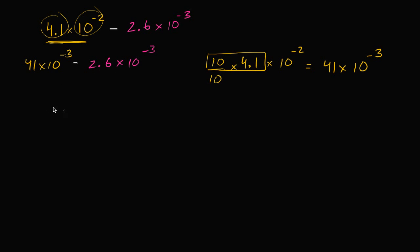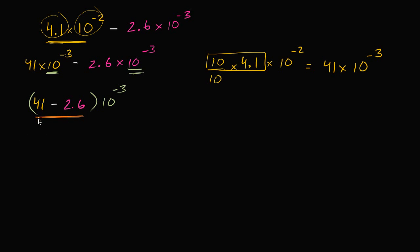This is the same thing as 41 minus 2.6, all times 10 to the negative 3 — we've just factored out 10 to the negative 3. Now, 41 minus 2 is 39, and then minus 0.6 gives us 38.4. So we get 38.4 times 10 to the negative 3rd power.